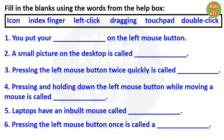Here, kids need to fill the blanks using the words from the help box. First one: you put your index finger on the left mouse button. Number 2: a small picture on the desktop is called icon.